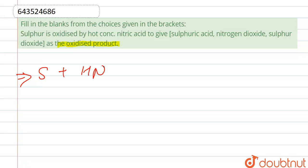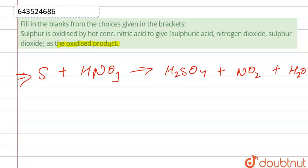reacts with HNO3, it gives H2SO4 plus NO2 plus water. After balancing, we should balance it — here it is 6, also 6, and here 2 — and this equation is totally balanced.